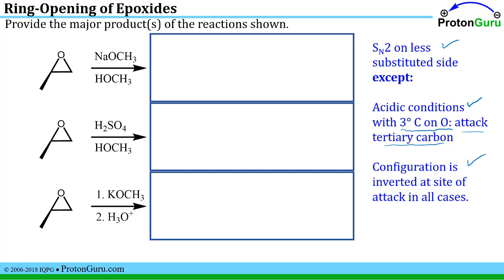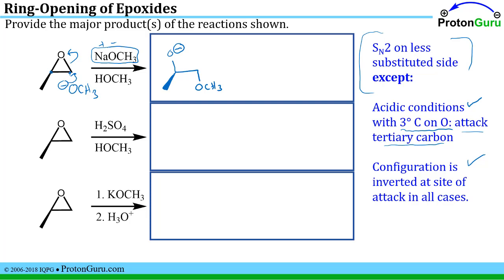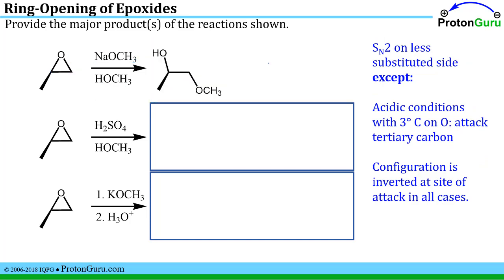In this first reaction we have a strong base, so we're going to do the usual SN2 on the less substituted side. The nucleophile will dissociate from its sodium cation and attack the less substituted of the two carbons attached to the oxygen, pushing the electrons up to the oxygen. That initially forms an intermediate, but the methanol present is deprotonated by this stronger base. The final product of this first reaction is the species shown here. We didn't attack the other carbon, so that chiral center retains its configuration.